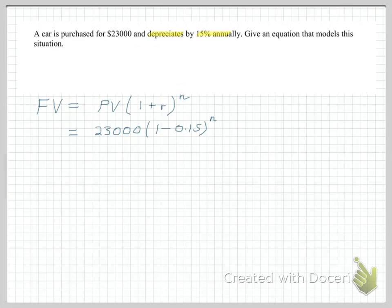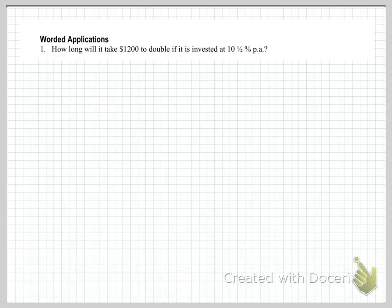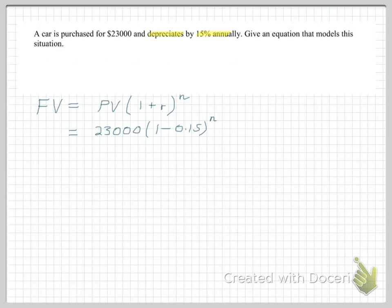Put in the values. How did we get 0.15? Well, remember that 15% is just 15 over 100, which is 0.15, and we're depreciating, so it's going to be a negative number.